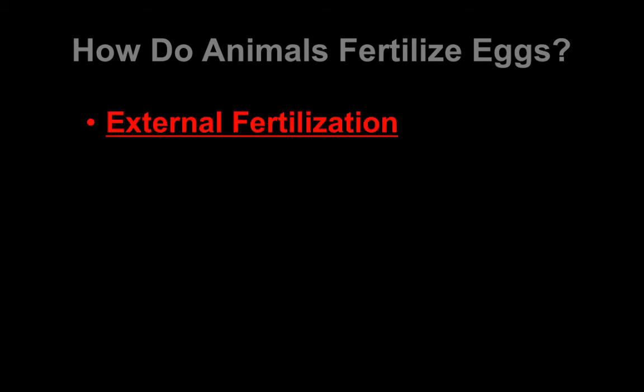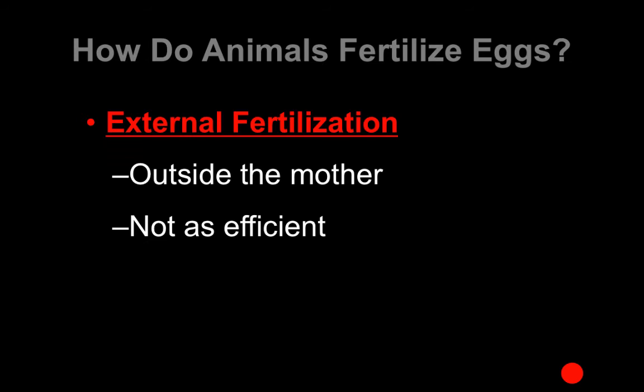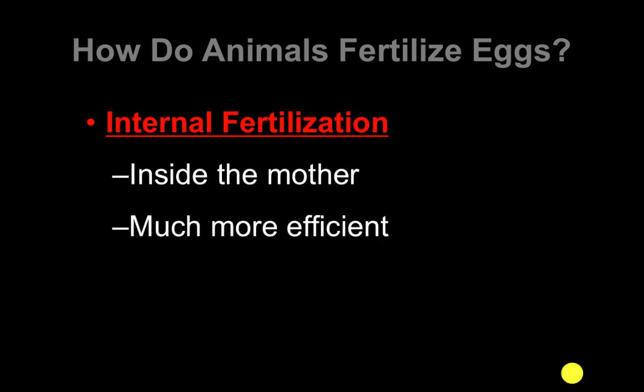Now let's look at animal reproduction. Animals are going to fertilize eggs in one of two ways: externally, which is outside of the mother and not as efficient, and internally, which is inside the mother and much more efficient. This is what we generally think of as fertilization.